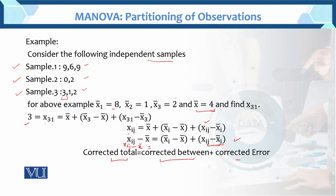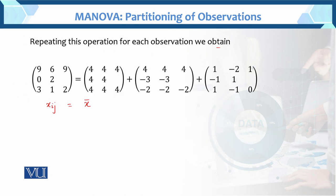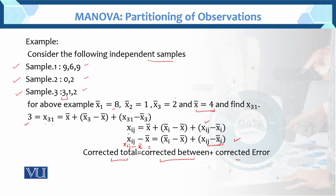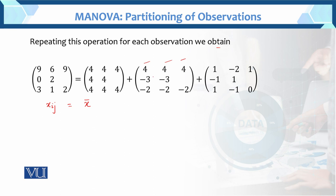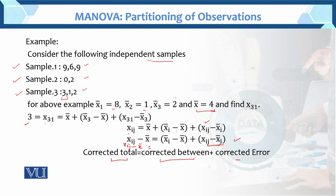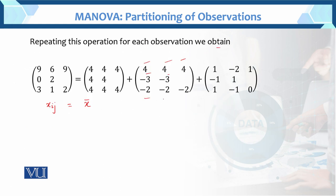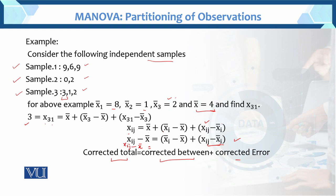For sample 1: x̄₁ = 8, x̄ = 4, so x̄₁ − x̄ = 4, 4, 4. For sample 2: x̄₂ = 1, x̄ = 4, so 1 − 4 = −3, −3. For sample 3: x̄₃ = 2, x̄ = 4, so 2 − 4 = −2, −2, −2. We have solved the deviation of each group mean from the overall mean.